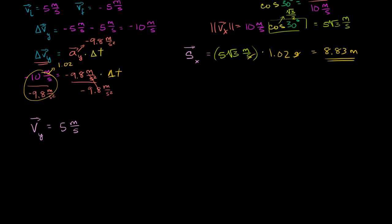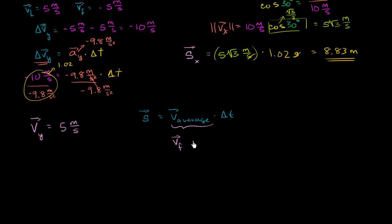So how can we figure out how long this thing stays in the air? We can remind ourselves that displacement is equal to average velocity times the change in time. And what is our average velocity? If we assume constant acceleration, it is our initial velocity plus our final velocity divided by 2 — the arithmetic mean of our initial and final velocities — multiplied by the change in time.